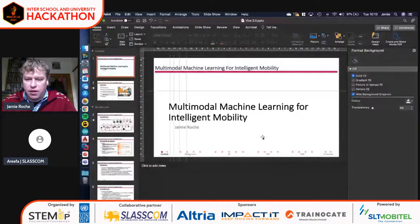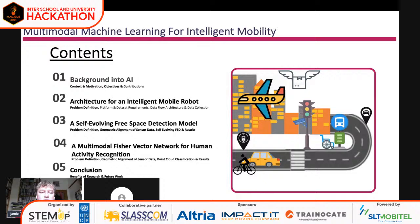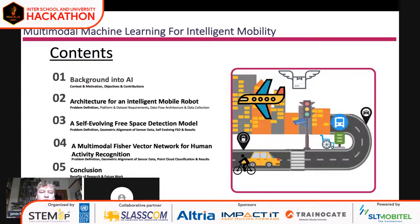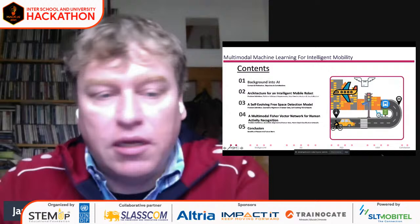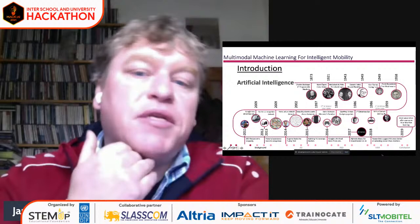I'm just going to share my screen with you now. Generally speaking, what I'm going to be talking to you about today is a brief background and introduction to artificial intelligence. I want to describe an architecture platform for a mobile robot that I've been working on. I'll be talking about a self-evolving free space detection model, a multi-modal feature vector network for human activity recognition, and then I'll be concluding with the benefits of the research and some possible future work.